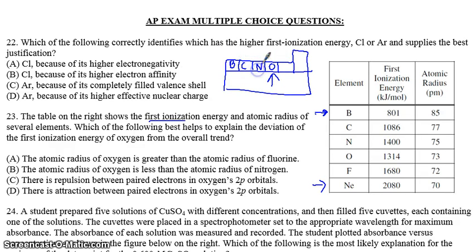Here we have boron, carbon, nitrogen, oxygen, fluorine, and neon. So they want to know why oxygen, it should increase. So from boron to carbon, we're increasing, increasing, increasing, and then all of a sudden we decrease.